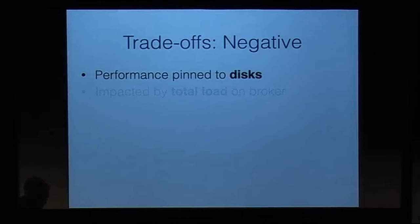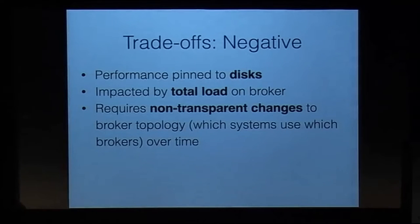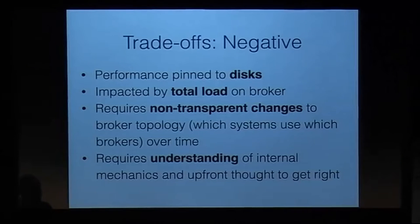So what are the downsides of this thing? Well, your performance is pinned to disks, fundamentally. It's impacted by the total load on the broker. If something's going on in one queue, you'll see another queue slow down. Which is a bit odd to a newcomer. It requires non-transparent changes to the broker topology. Sometimes you'll actually have to go into your application and say, oh, actually we're going to need to move these queues out to somewhere else. And introduce another, say, connection factory if you're talking through JMS. So the triggers for this change are changes in traffic volumes, number of destinations, payload sizes, all of these types of things. And fundamentally, it requires an understanding of the internal mechanics and some upfront thought to get right. And there are a lot of features and some of these features conflict with each other. It's as simple as that.